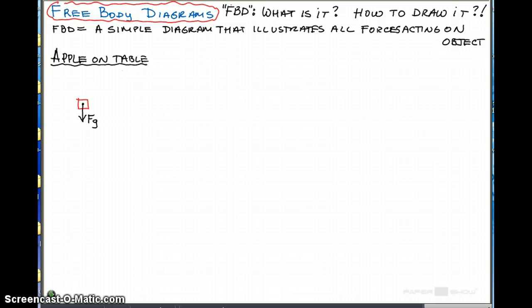Now if the apple's on the table and gravity is pulling down, we notice that the apple doesn't move down, so there must be an opposing force acting on the apple. That opposing force would be the table pushing upward and we call that force N, which means normal force.